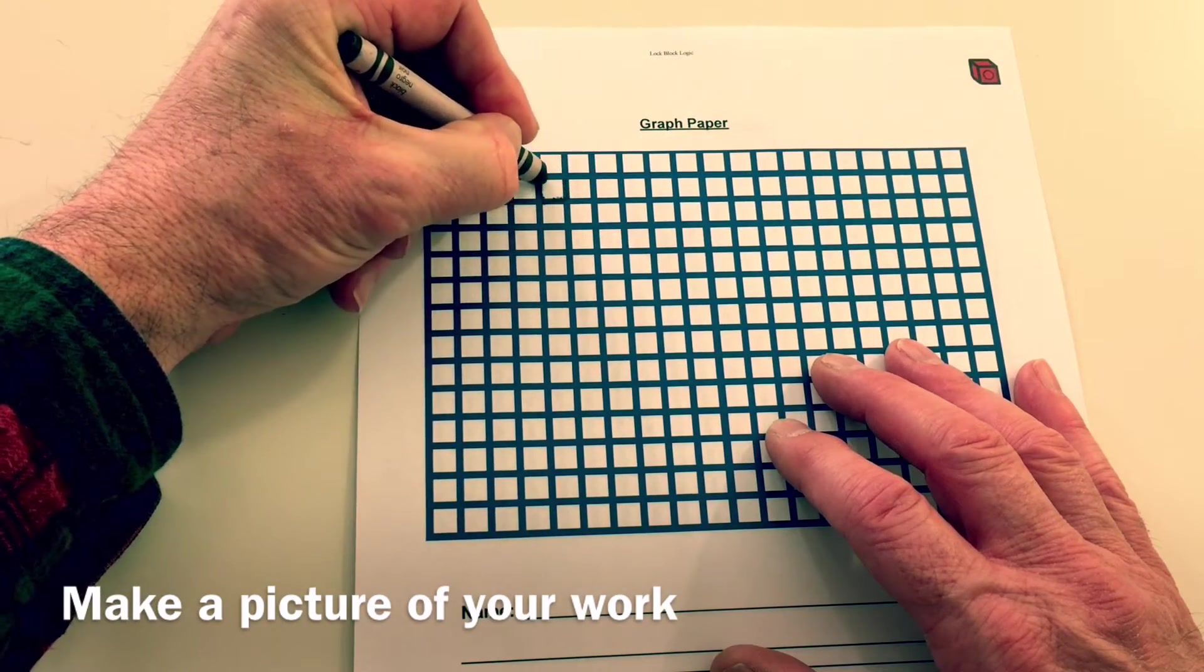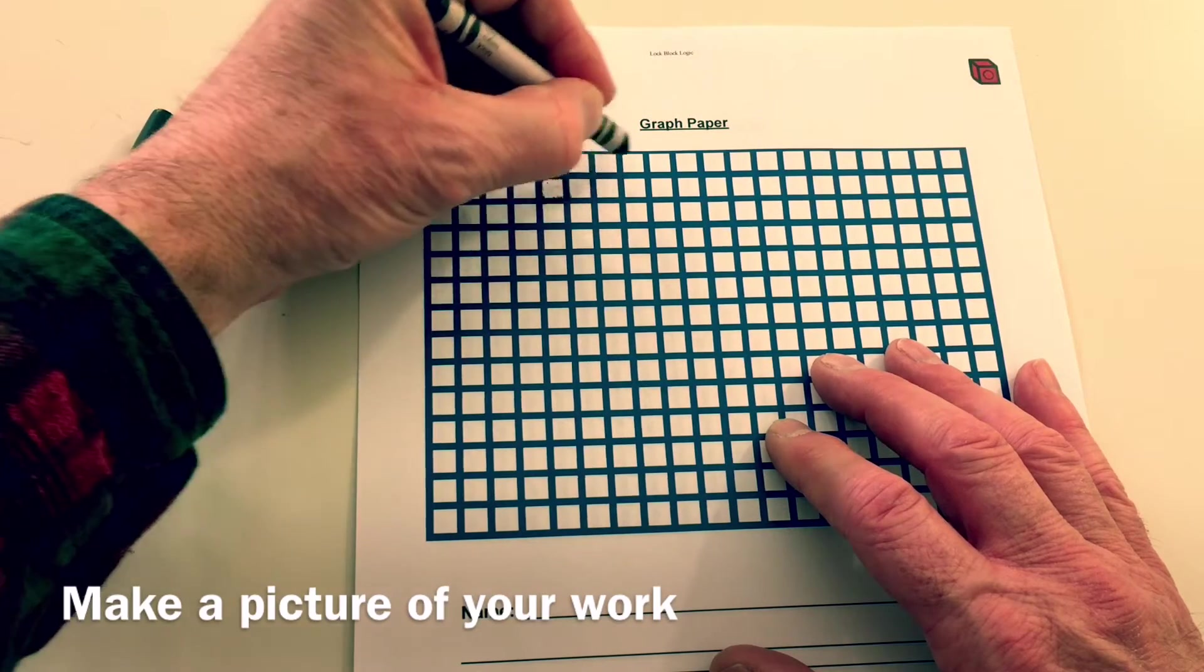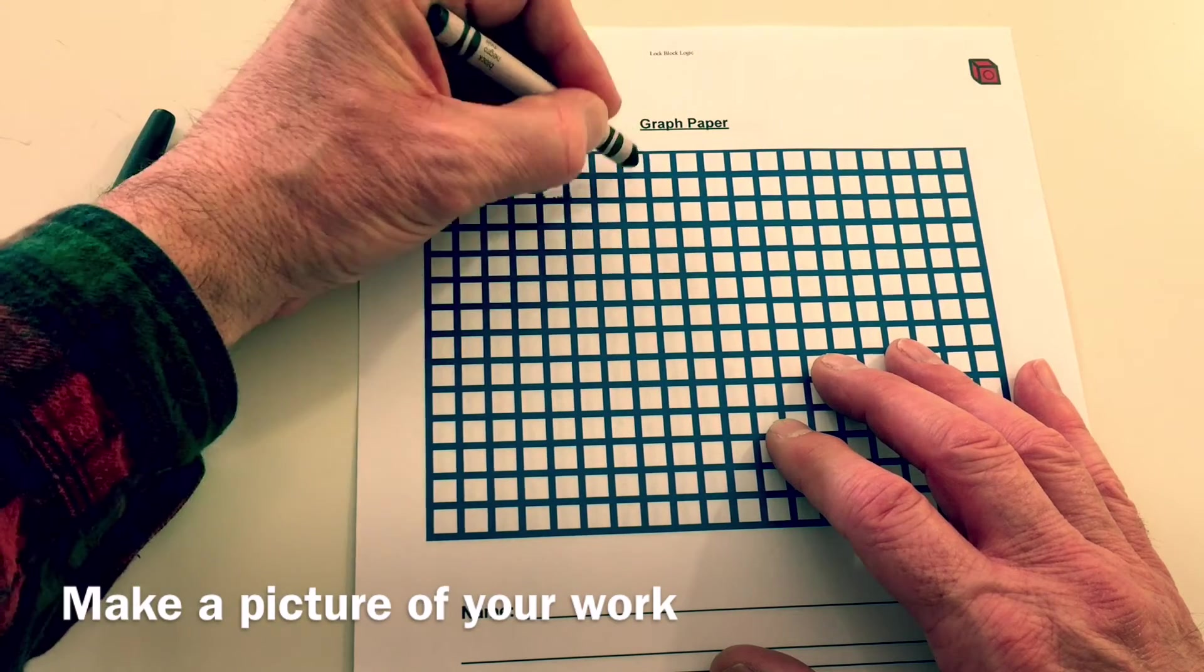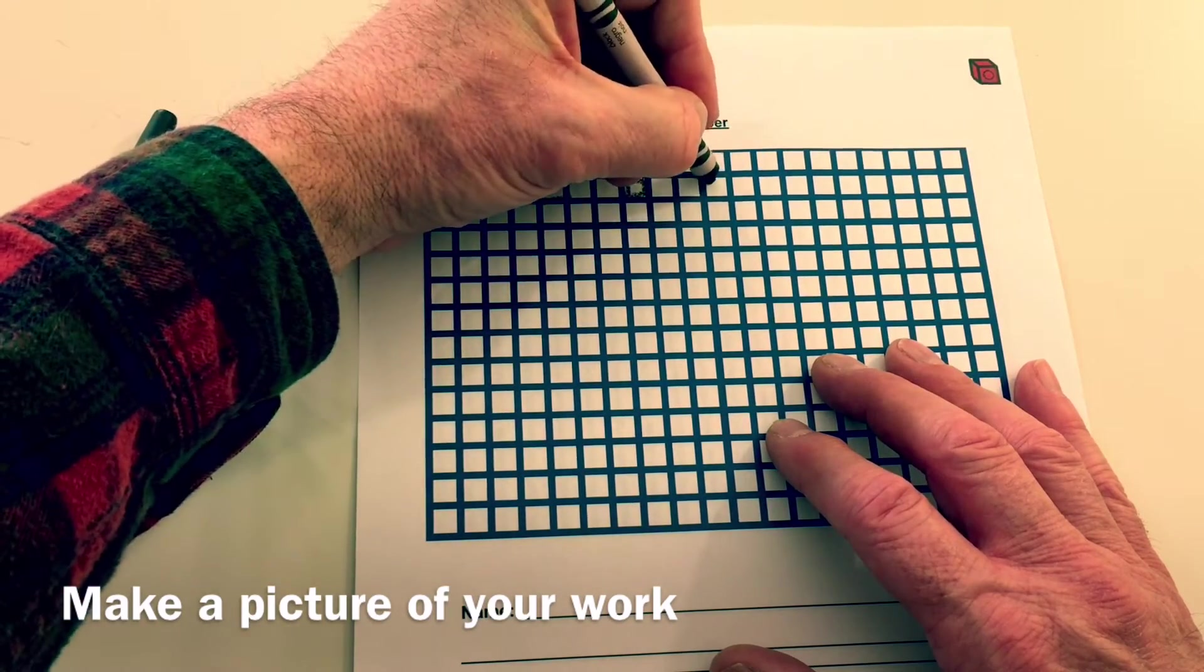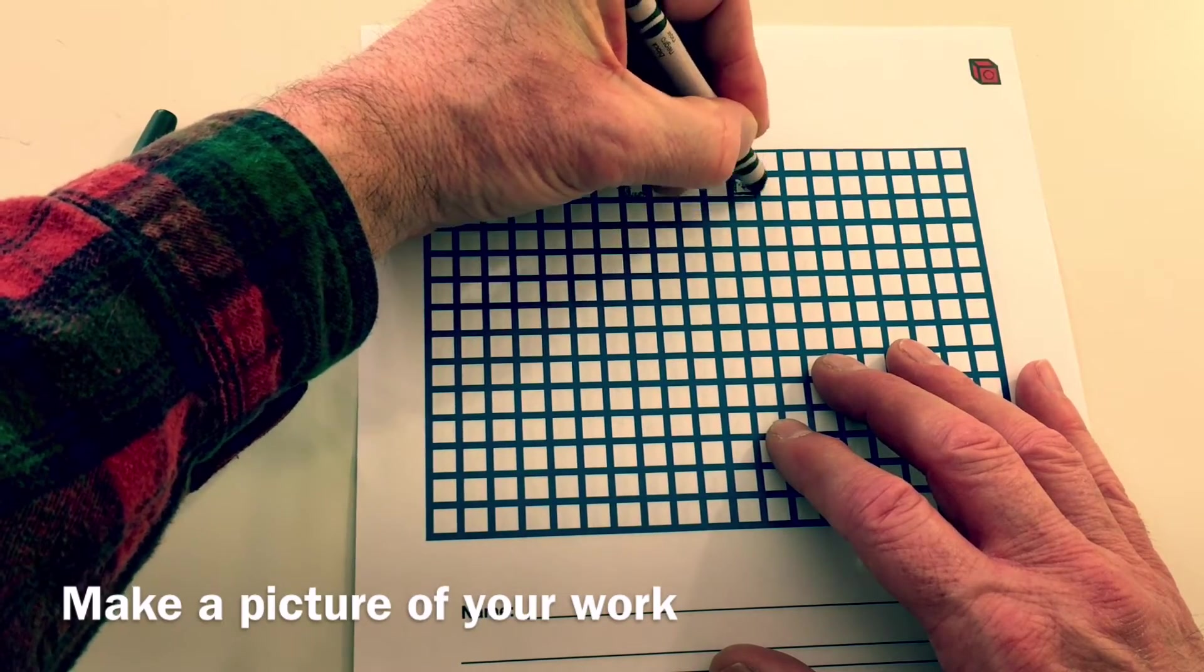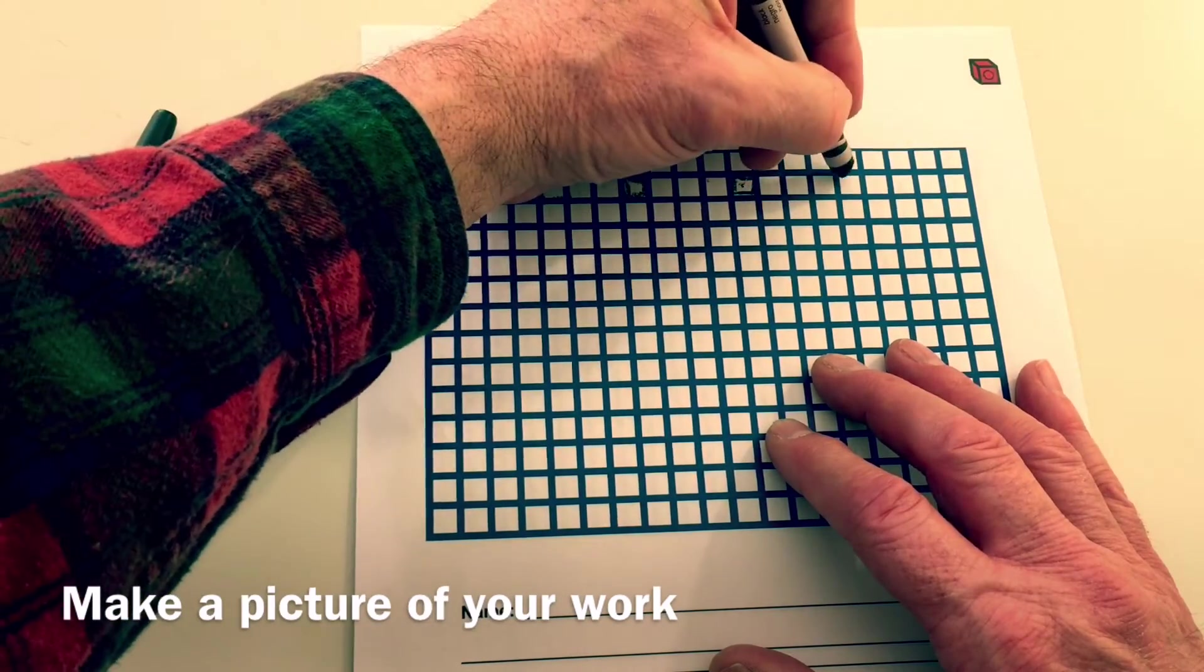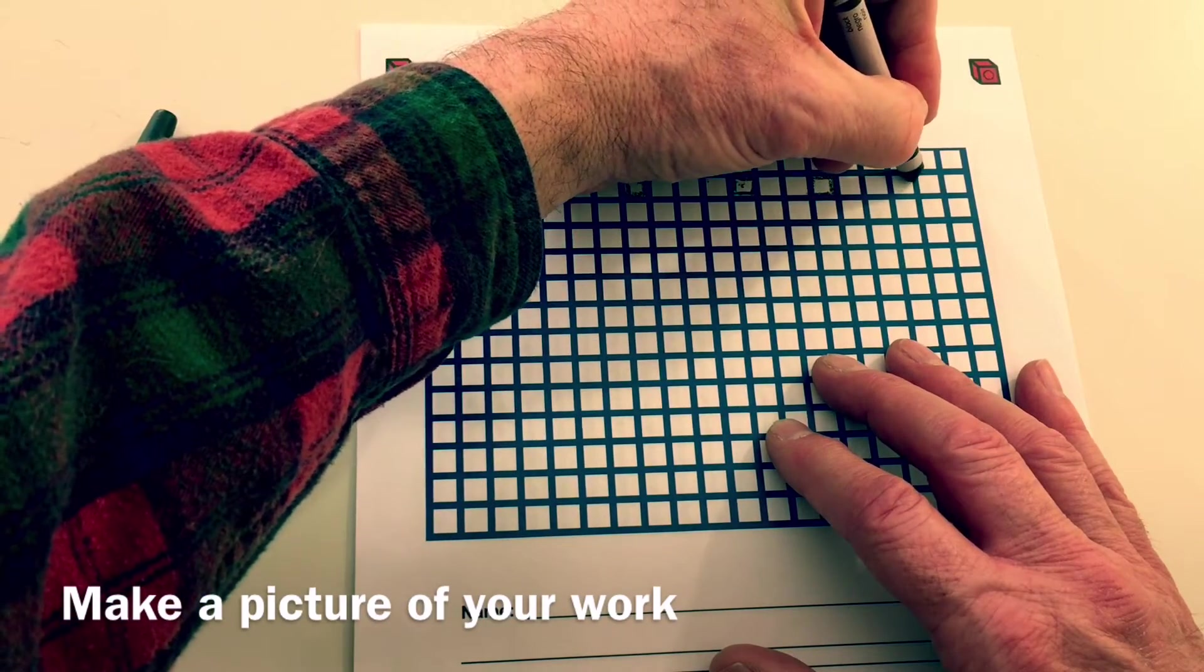So I'm going to start up here and maybe I'll outline everything with black. Here's one, one block. Here's two one-blocks. Here's another three, four, five.